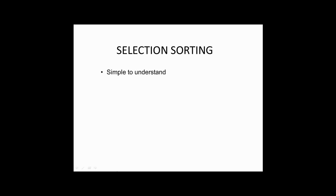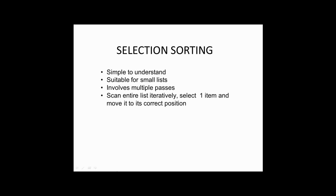It is also suitable for small lists only, and moreover it also involves multiple passes. Selection sorting scans through the list iteratively and selects one item in each scan and moves that item to its correct position. This is how it obtains its name, selection sorting.